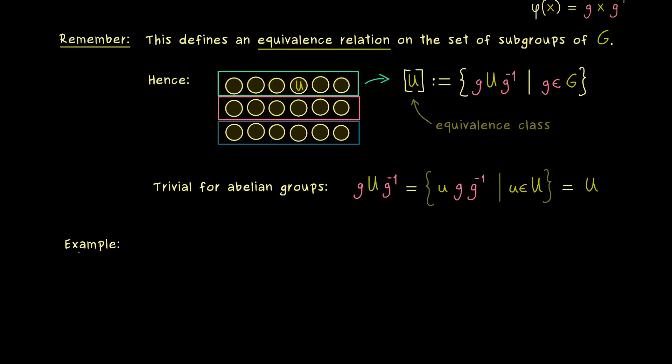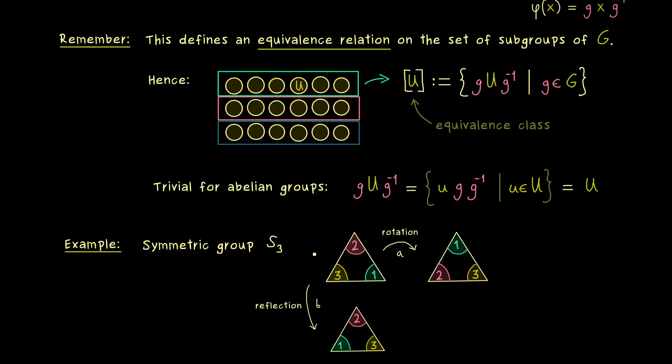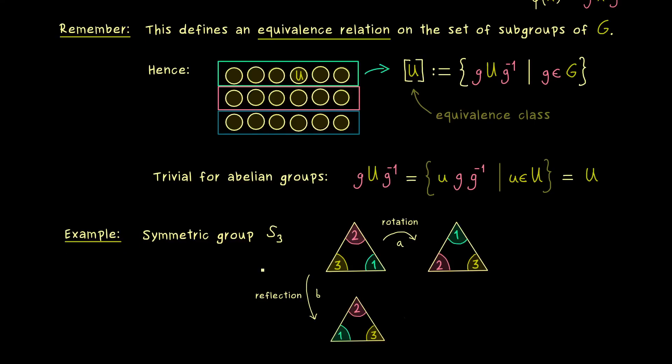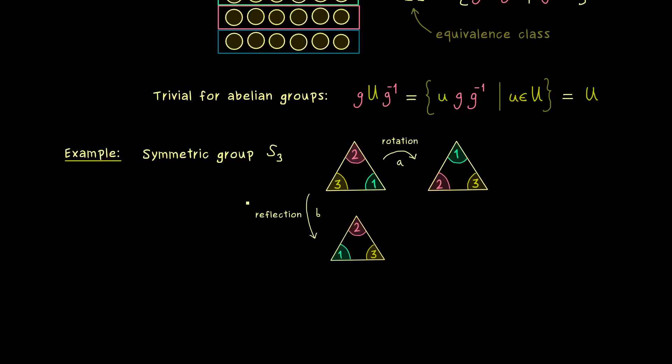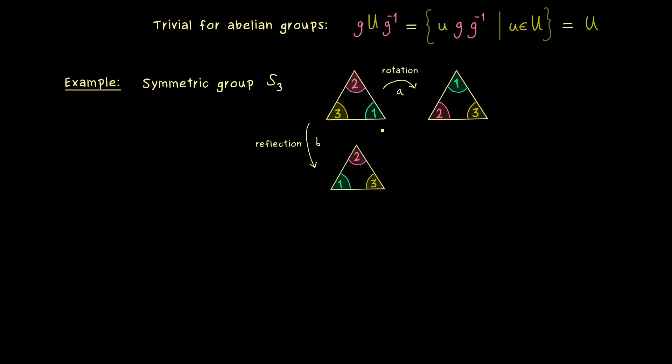Therefore if we want to discuss an example, we should take one which is not commutative. This means the order should be not too small and we already know one example, namely the symmetric group S₃. So please recall part 7, where we have discussed the whole thing and where we have also explained that we can see it as a permutation group on 3 elements. On the other hand, equivalently, we can also describe S₃ with this rotation and reflection operation.